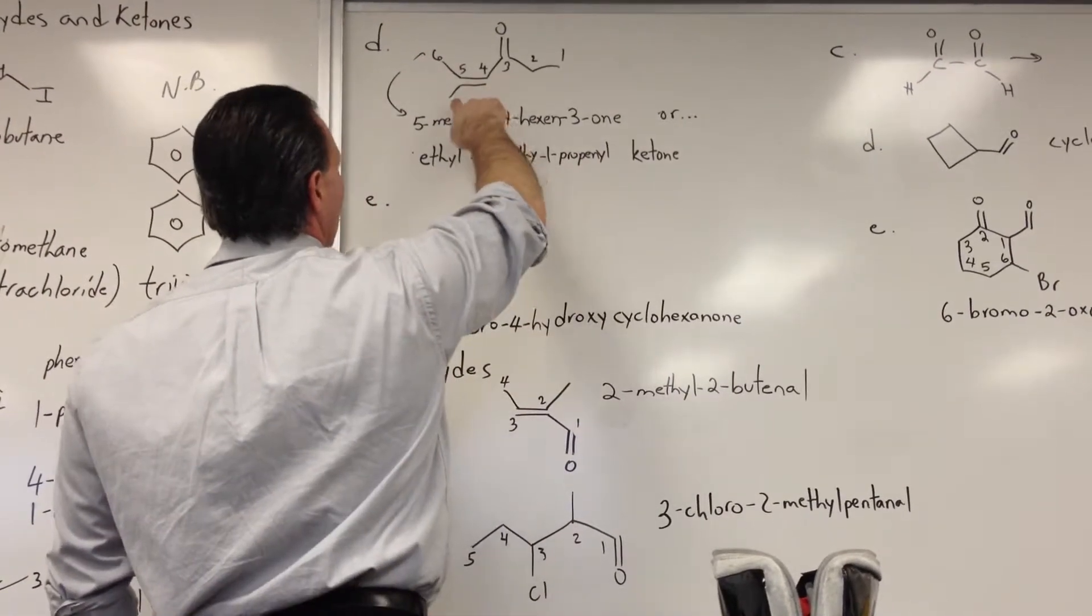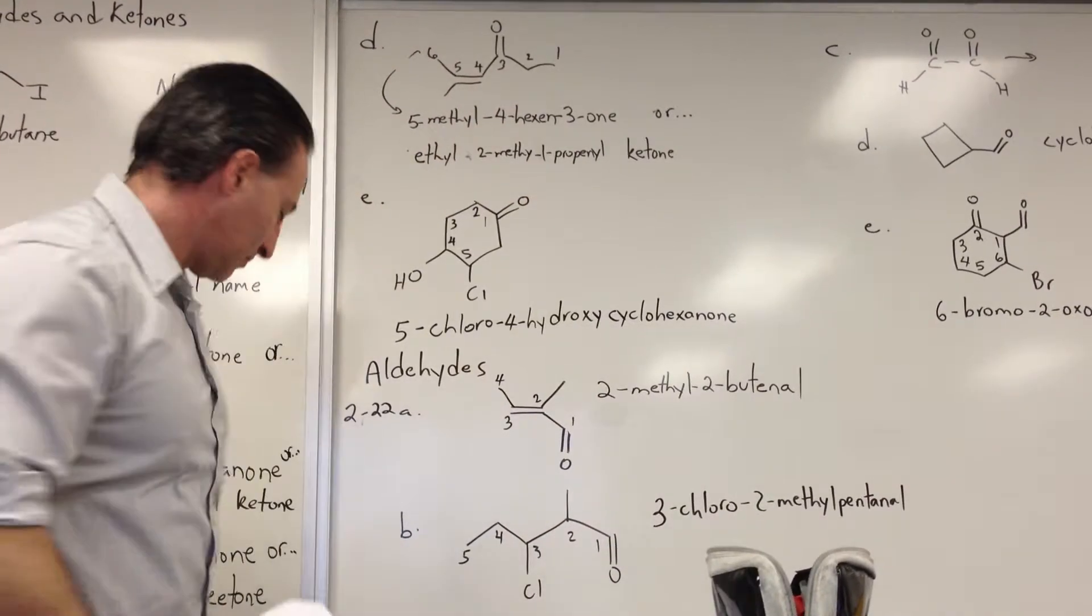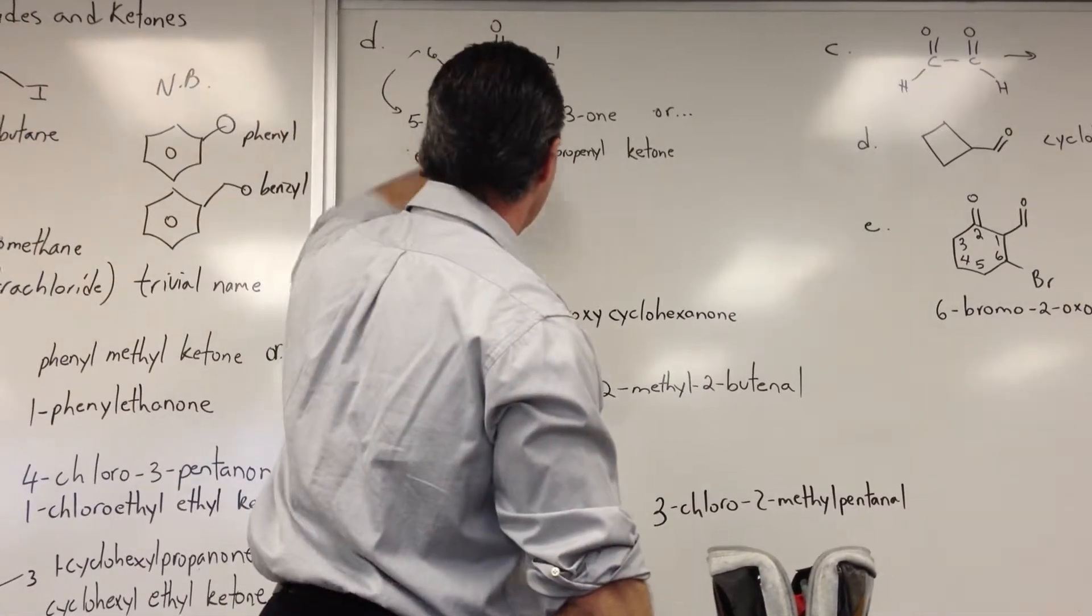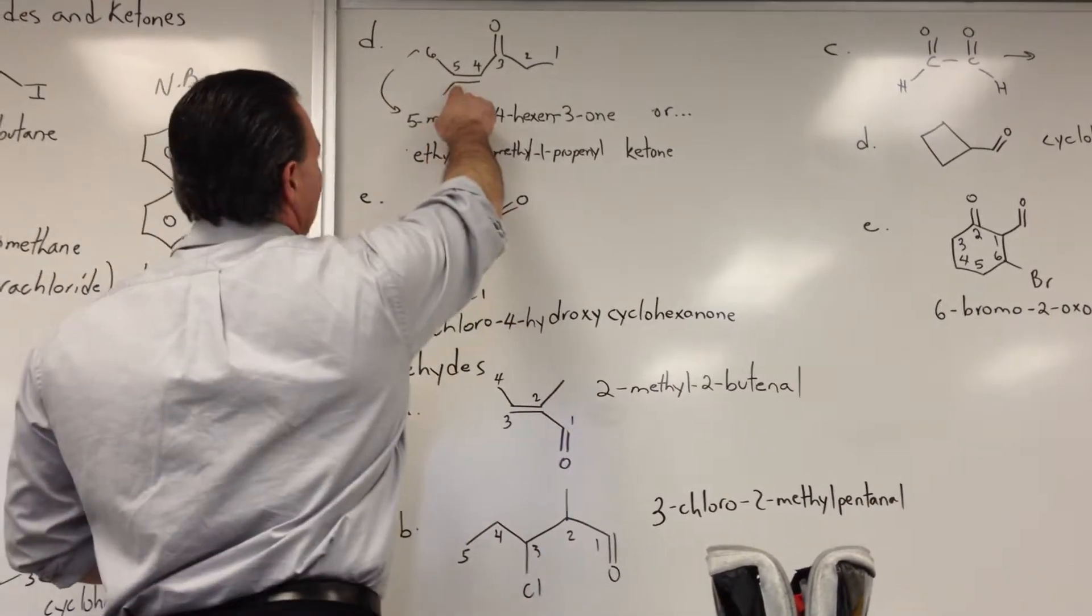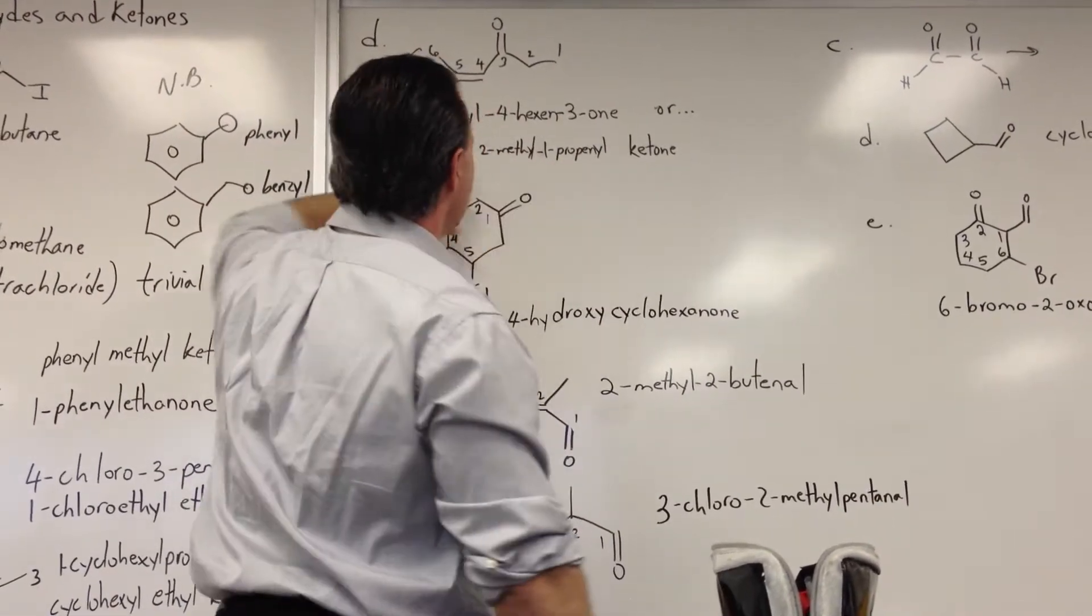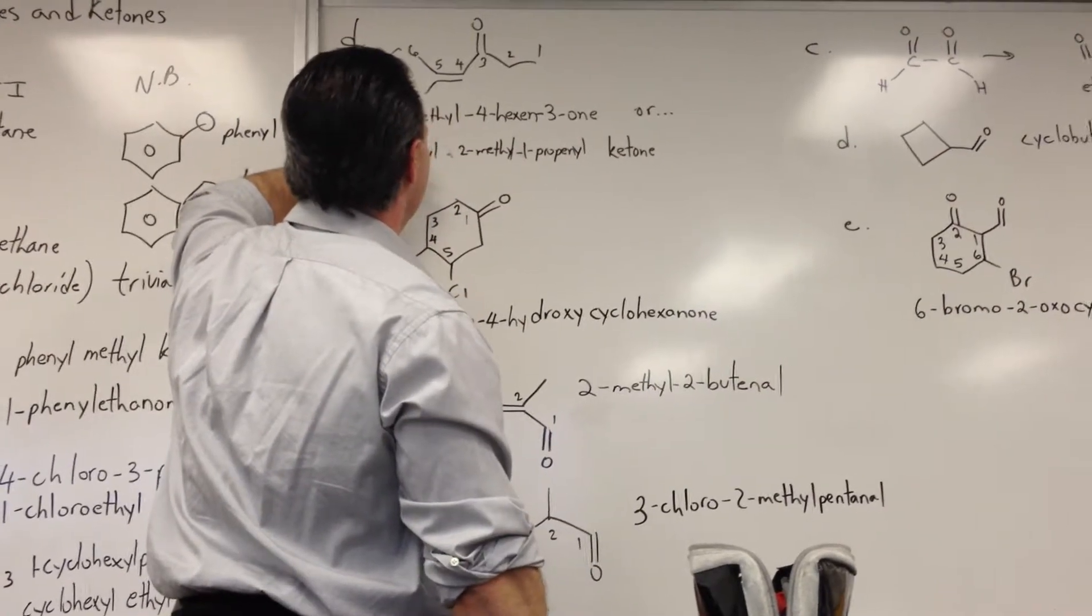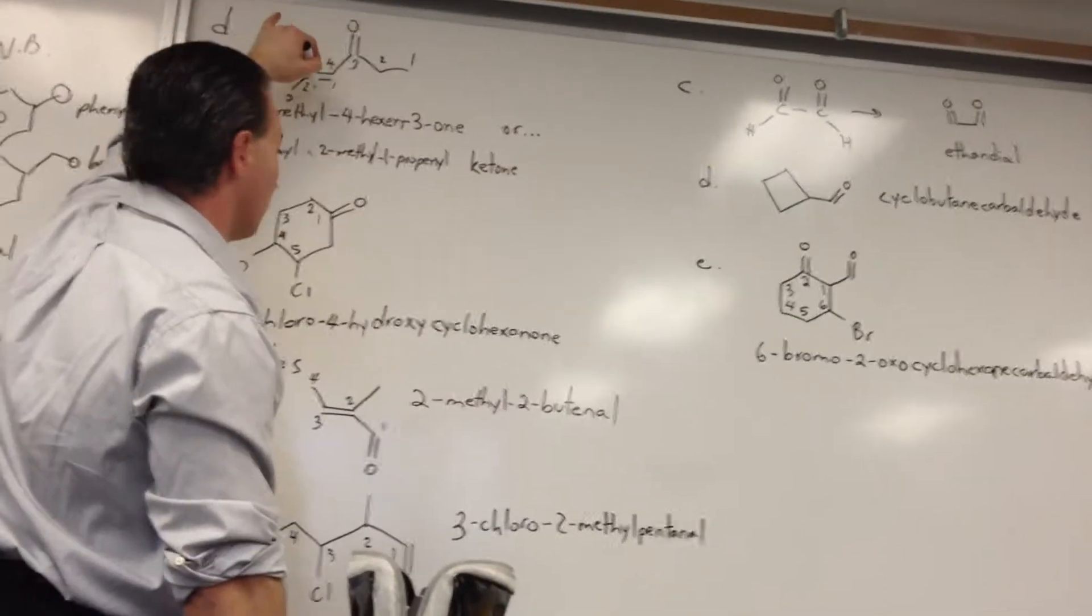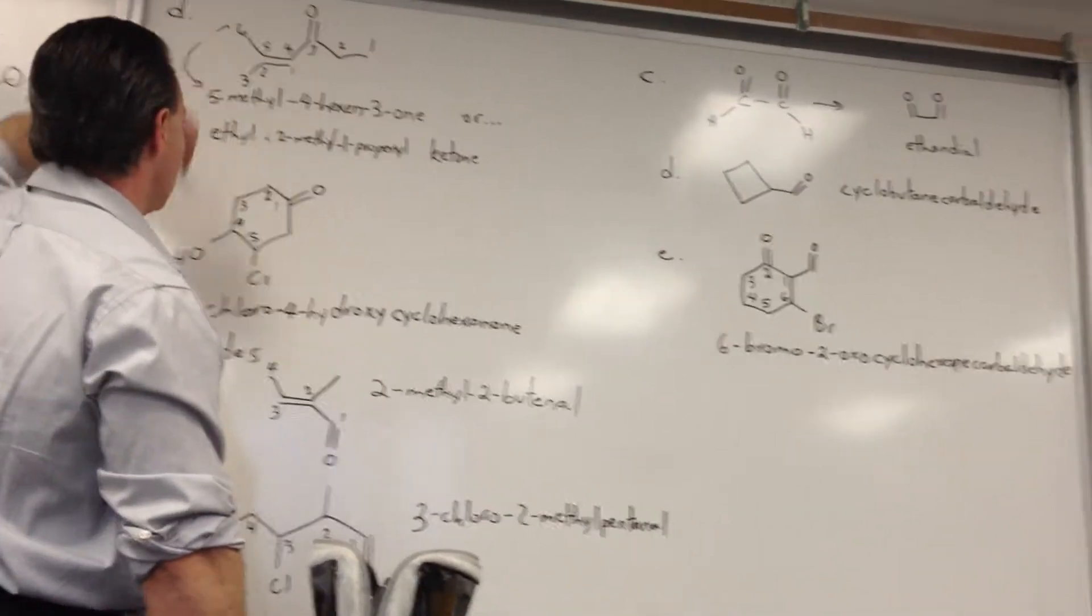The 1 signifies where the double bond starts. The 2 signifies where the methyl group is. I forgot to write the yl for the methyl group. So 2-methyl. If I was to renumber it so as to give this name priority, then I would call this 1-2-3 because the substituents are named after the first carbon at the branch point.